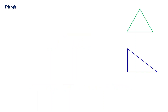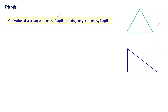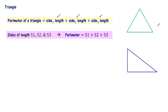Triangle is a 2D plane figure. Triangle has three sides. Now, perimeter of the triangle — let's take this particular triangle. It has got three sides; the sum of the three side lengths is the perimeter. The perimeter is defined as length of side 1 plus length of side 2 plus length of side 3. If I say that S1, S2, S3 are the lengths of the three sides, the perimeter is S1 plus S2 plus S3.